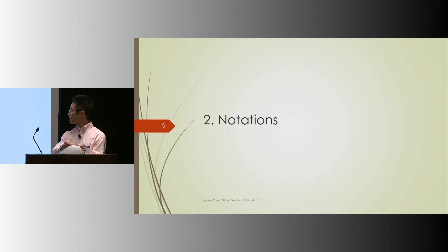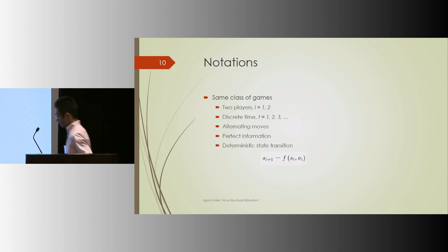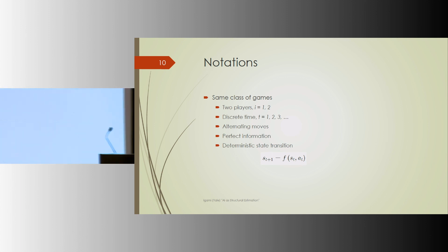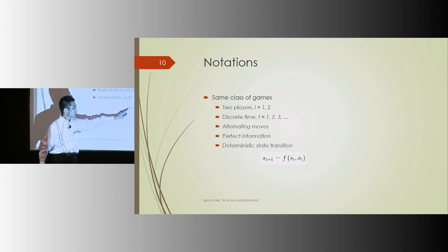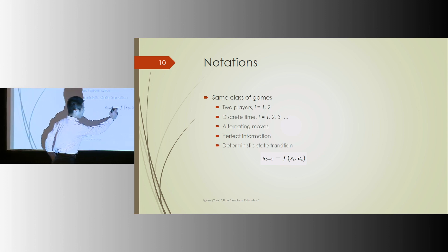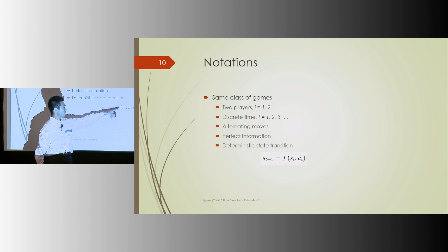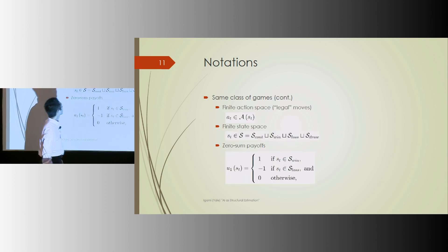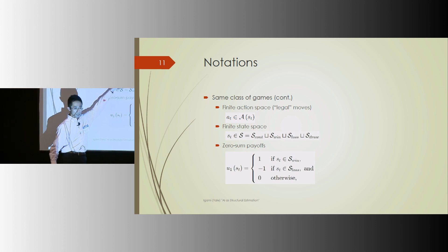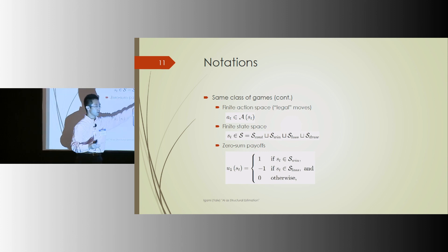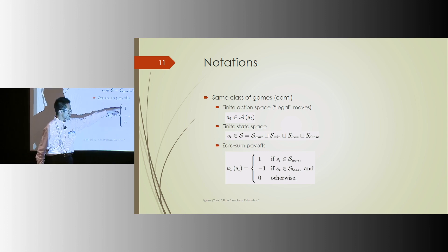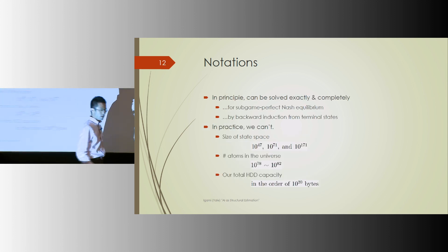Before jumping into the AIs, let's get notations straight. Chess, Shogi, and Go belong to the same class of games where you have two players, discrete time, alternating moves, perfect information, and deterministic state transition, like the next state of the board ST plus 1 is completely determined by current state and current action A. The action space script A is finite because there are only so many legal moves that you are allowed to take. The state space is also finite, the state consisting of continuation, winning, loss, or draw. The payoffs are zero until someone wins or loses. So it's a zero-sum game.